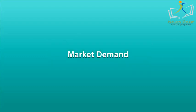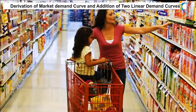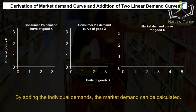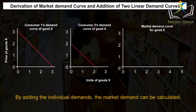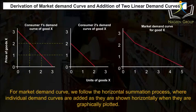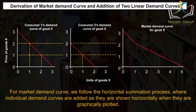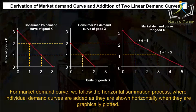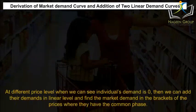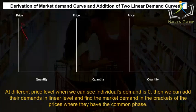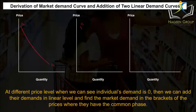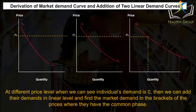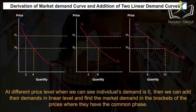Market Demand Curve. Derivation of the market demand curve involves addition of individual linear demand curves. By adding the individual demands, the market demand can be calculated. For the market demand curve, we follow the horizontal summation process where individual demand curves are added horizontally as they are graphically plotted. At different price levels when an individual's demand is zero, we add their demands at the linear level and find the market demands in the price range where they have the common phase.